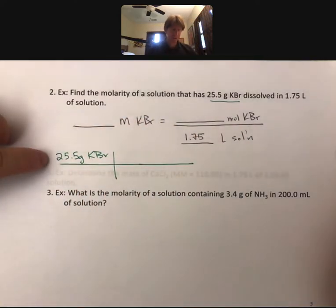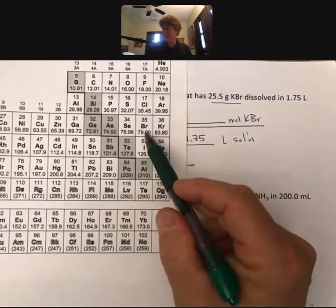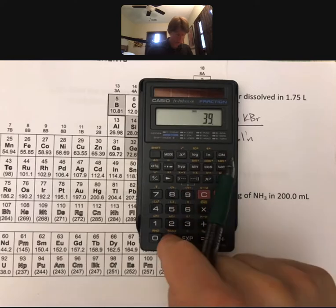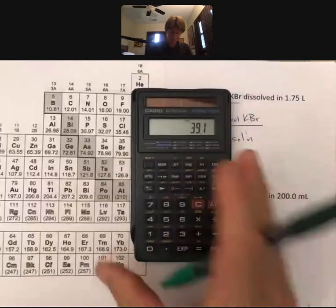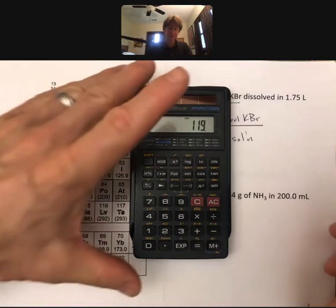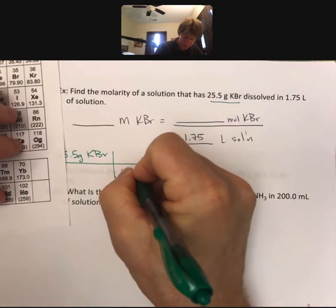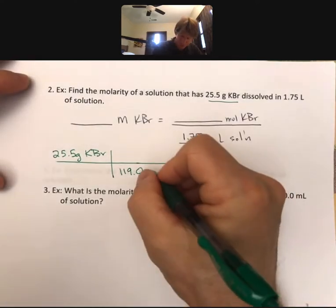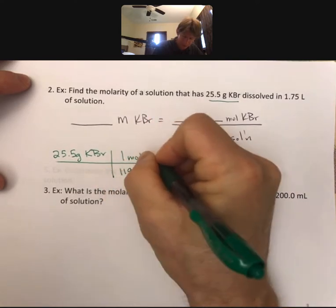We have our 25.5 grams of potassium bromide. Bromine is 79.9 and potassium is 39.1, so let's do 39.1 plus 79.9. That gives me 119.0, because I'm going to always do my molar masses to at least four sig figs, so it has one more sig fig than this. So grams KBr, one mole KBr.